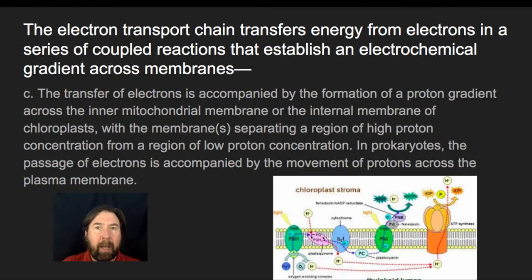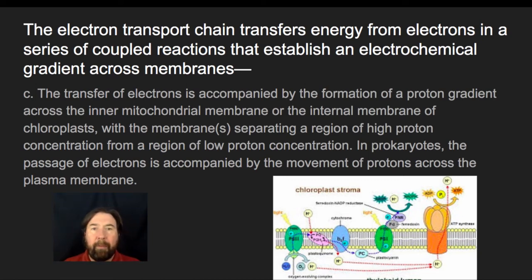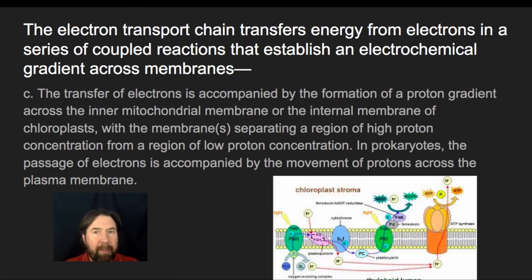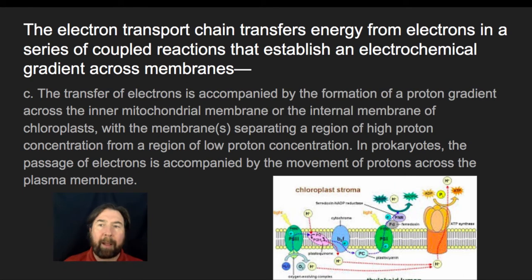The transfer of electrons is accompanied by the formation of a proton gradient. In the mitochondria, this occurs across the inner mitochondrial membrane, and the internal membrane of a chloroplast does the exact same thing. The membranes separate regions where the low proton concentration is on one side and the high concentration on the other. In prokaryotes, the passage of electrons is accompanied by the movement of a proton across the plasma membrane. In each of these cases, we use the electron transport chain to pump hydrogens to one side and control their return to make our energy.